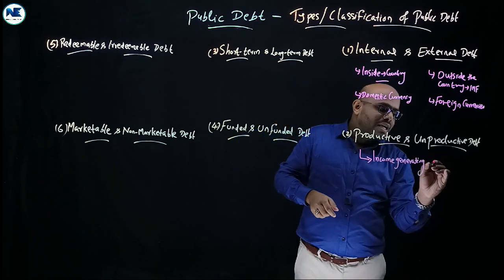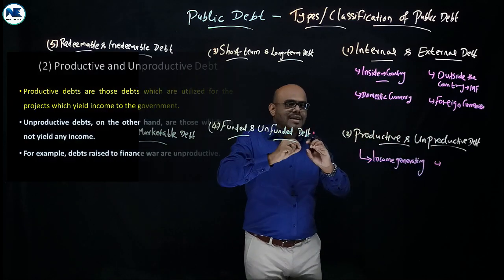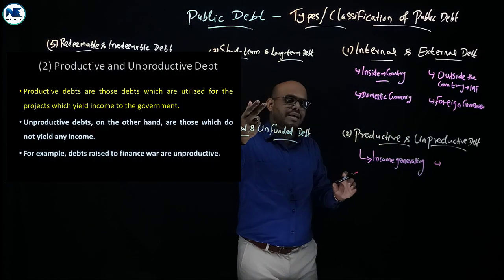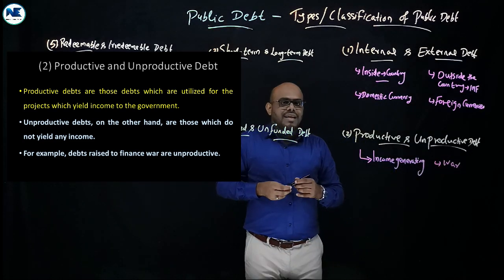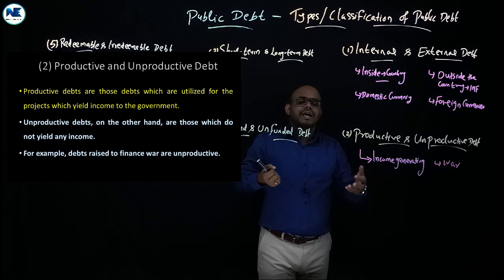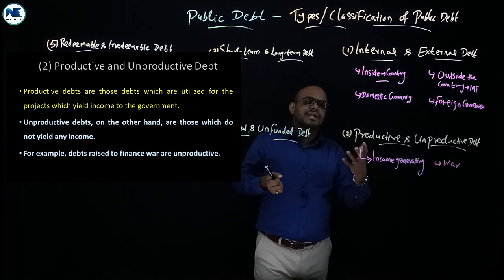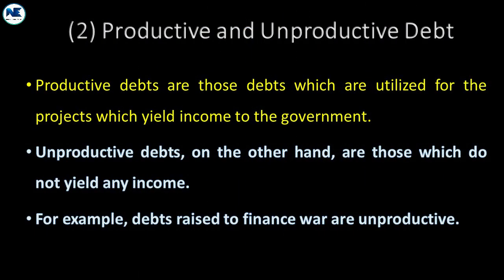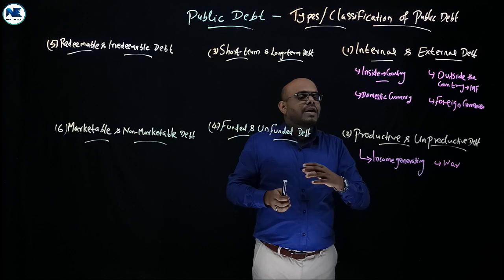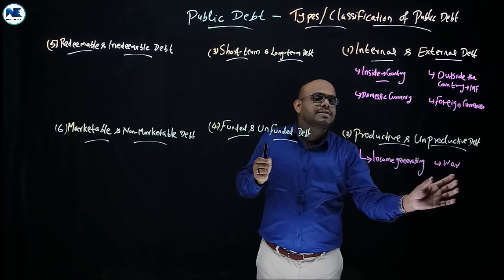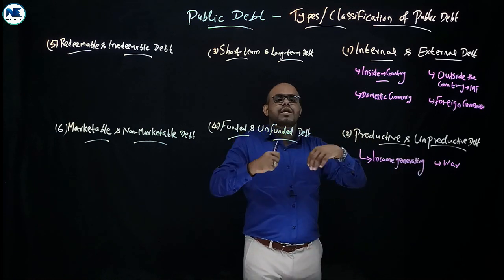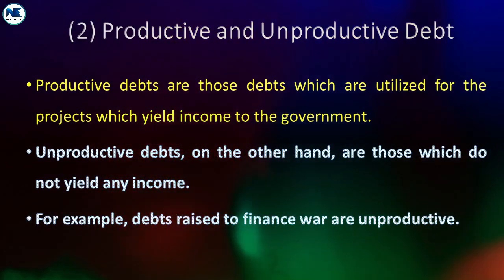On the other hand, unproductive debt is when the fund is utilized for unproductive areas. A best example is to finance war. In this case, the government may struggle to repay the principal amount and the rate of interest.